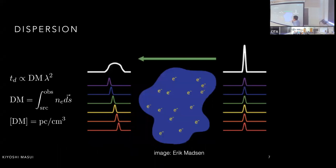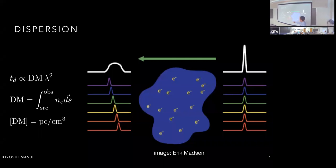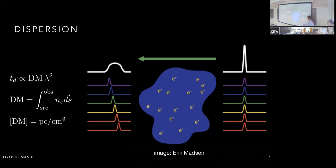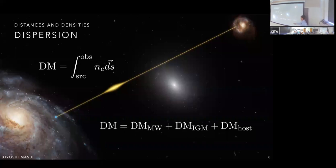That delay is proportional to the wavelength squared, with the proportionality constant involving known fundamental constants and a quantity called the dispersion measure (DM). The DM is simply the column density of intervening electrons — the line-of-sight integral of electron density, measured in units of parsecs per centimeter cubed. Every fast radio burst gives us a very precise measurement of this DM: the total delay is of order seconds while the burst duration is milliseconds, so we measure the DM to about one part in a thousand.